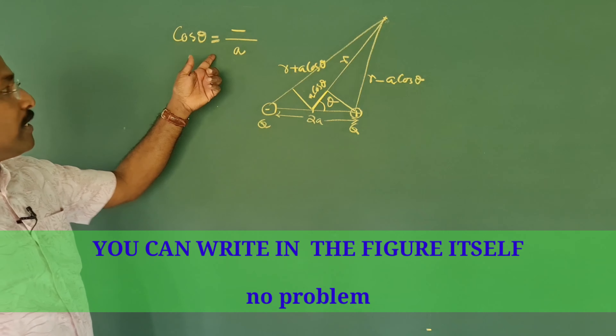That completes the geometric setup — you need not write this derivation step in the exam. Now the distances are known. The total potential at that point is V = (1/4πε₀)[Q/(R − a·cosθ)] + (1/4πε₀)[−Q/(R + a·cosθ)]. Taking Q/4πε₀ outside as a common factor.